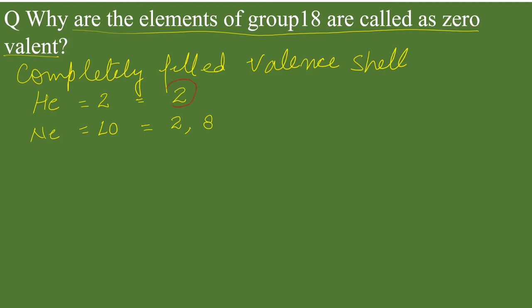As we can see, this is the outermost shell for helium, which is K shell, and it is completely filled. If we talk about neon, its outermost shell is L shell, and its capacity is 8 electrons. 8 electrons are present in the shell, so it is also completely filled valence shell. This is the reason their valency is zero.